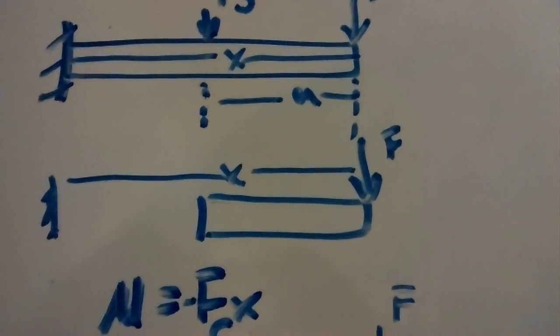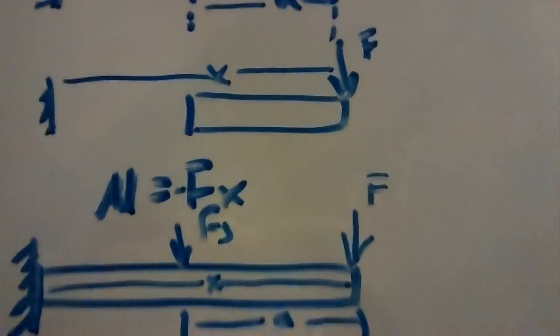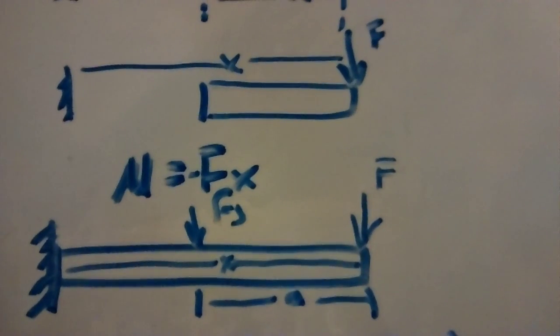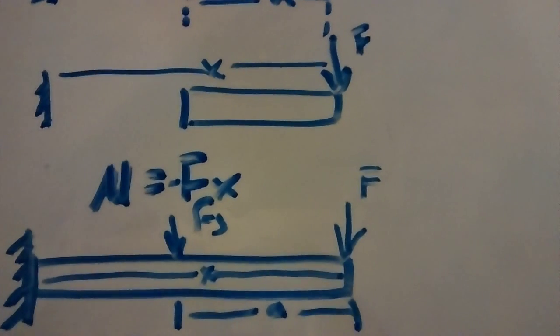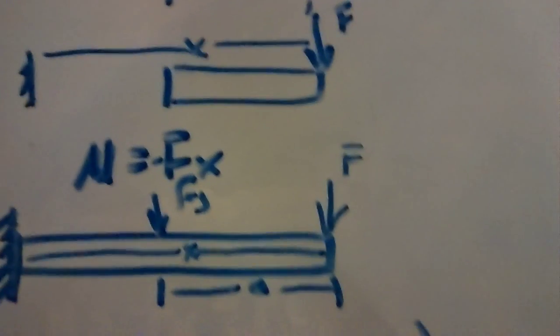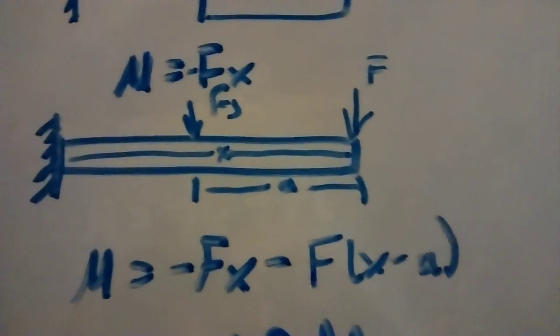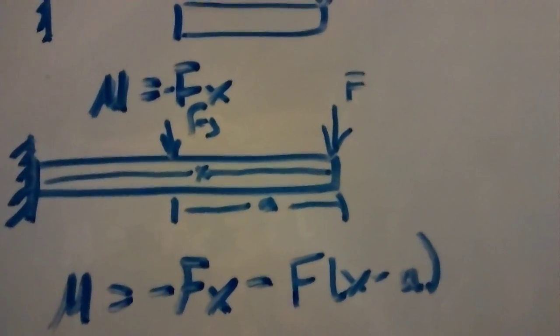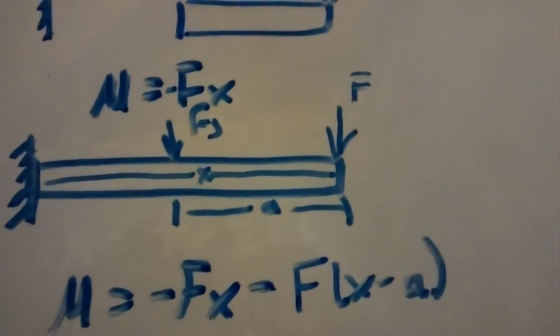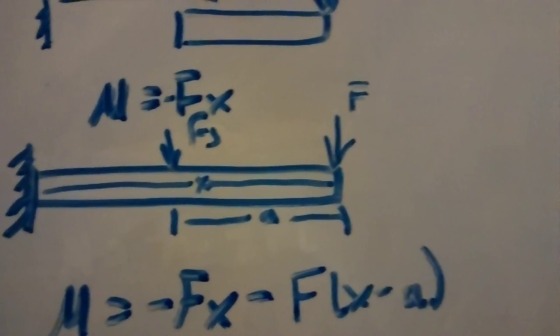Now using the Fj part of the beam, we say F and Fj, and our distances make another moment equation, which is going to be M equals to negative Fx minus F times x minus a, because we are taking the difference of x minus a.